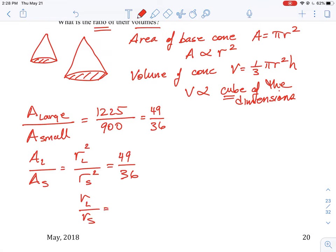But we do know what the area ratio is: it's equal to 49 over 36. This allows us to solve for the ratio of the radius for the large to small.